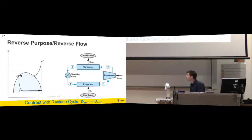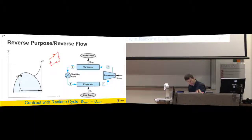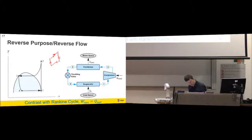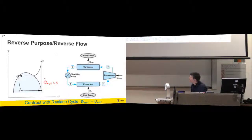In a TS diagram, Q-net equals W-net which is the area inside the cycle. If you go clockwise the cyclic integral gives a high positive number and a low negative number. If we go the cycle the other way - anti-clockwise - we've got a high negative number and a low positive number. So we find that our Q-net will be less than one, because the area inside is considered negative.